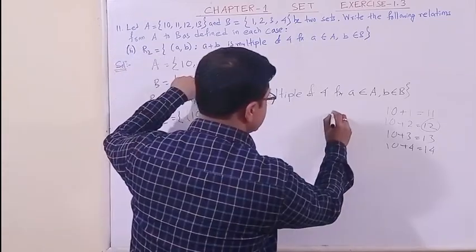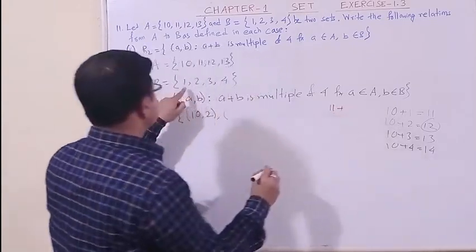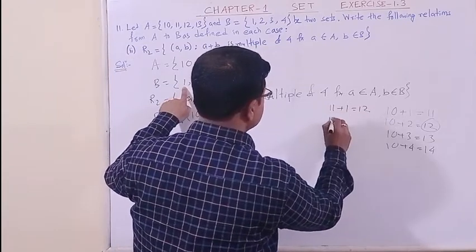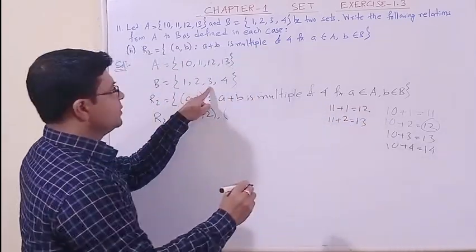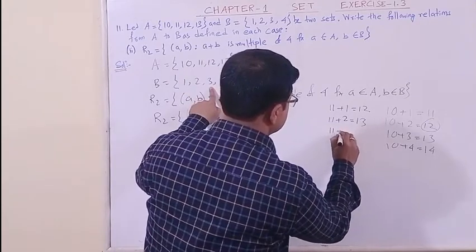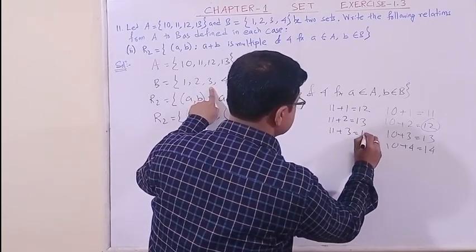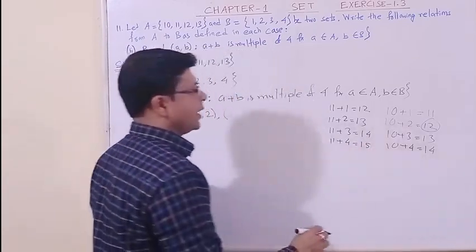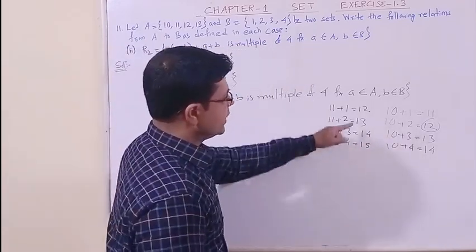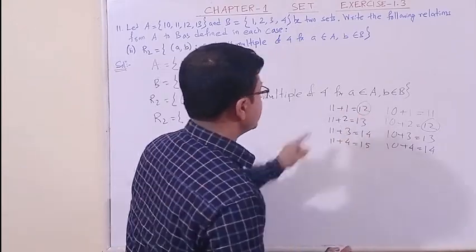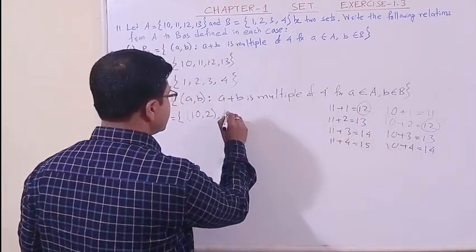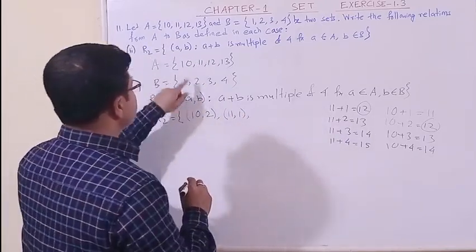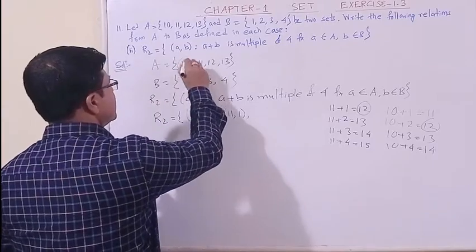11 next. 11 plus 1 is 12, 11 plus 2 is 13, 11 plus 3 is 14, 11 plus 4 is 15. Now again, you see among these four, again this number 12 is divisible by 4. So the first component is 11 and the second component is 1. After that, take 12. 12 is fixed.